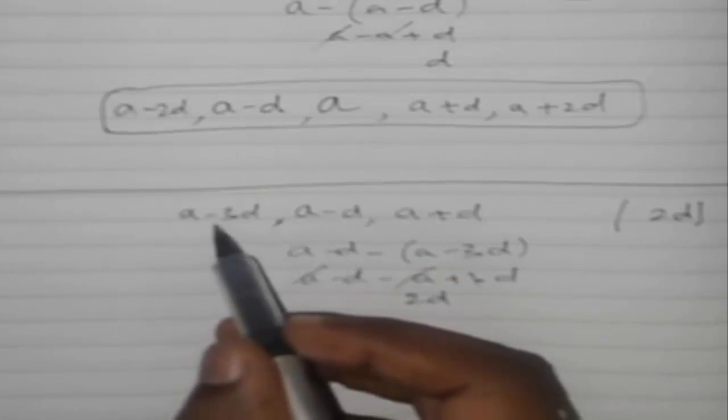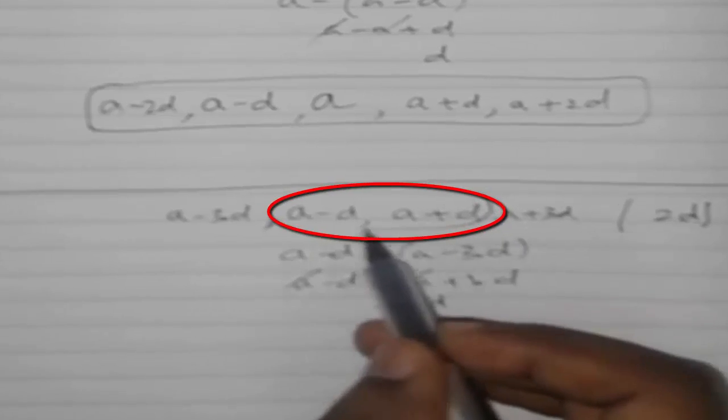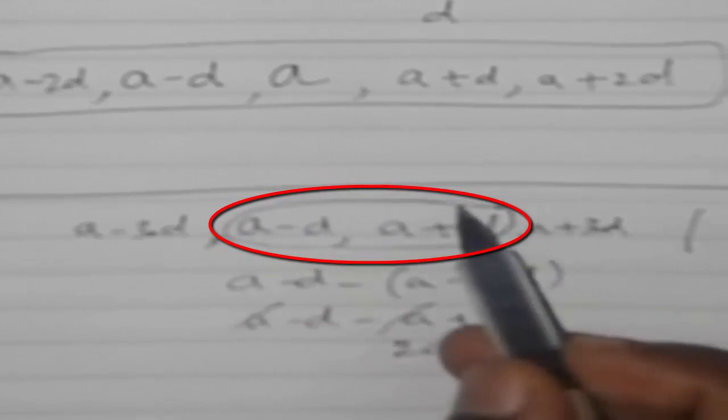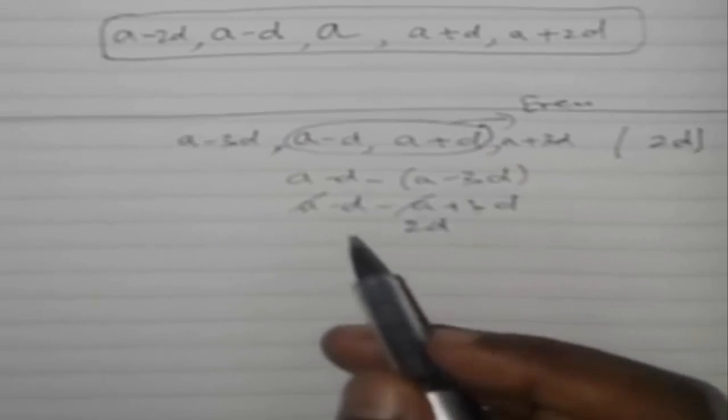Then it should be a plus 3d. This term should be in the middle whenever you are finding even numbers of AP. Now similarly, if they ask us to prepare six terms of AP, then as I said, six is even, so a minus d and a plus d should be in the middle.